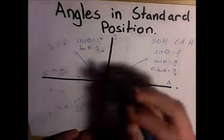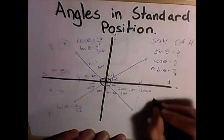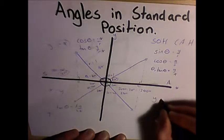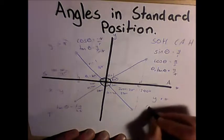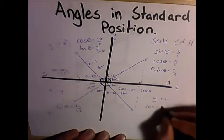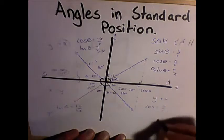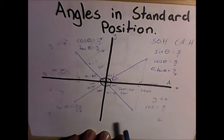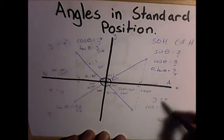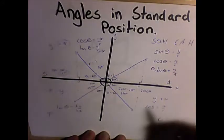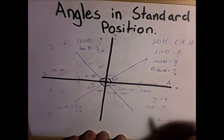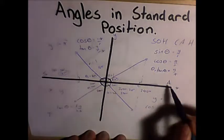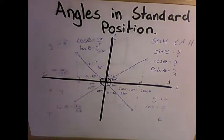And in this quadrant, with our negative y value, but a positive x value, we find that our cos value is the only positive value. A shortcut to remembering this is CAST. In the fourth quadrant, all cos ratios are positive, and so on and so forth. A being all, S being sine, and T being tan.